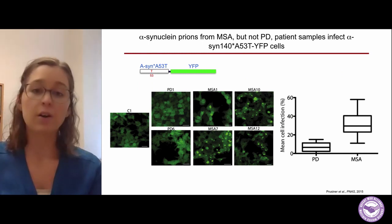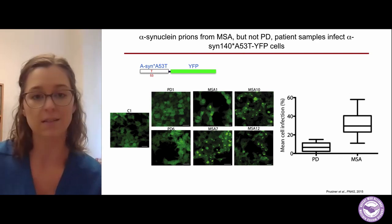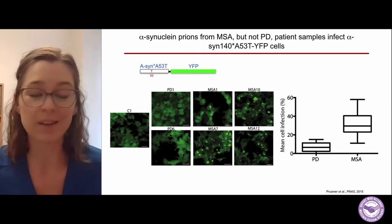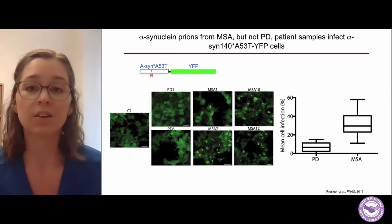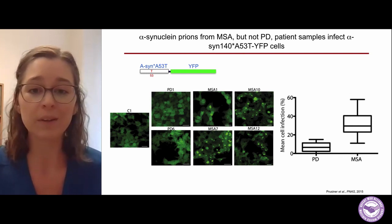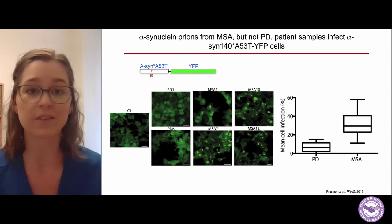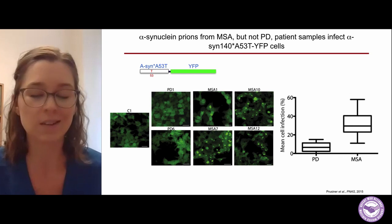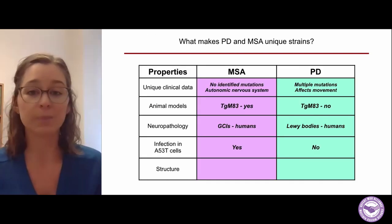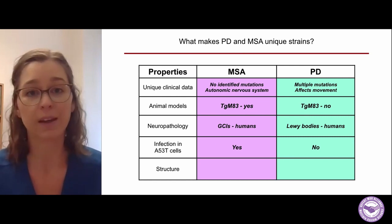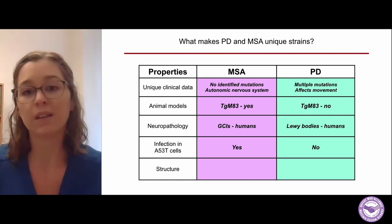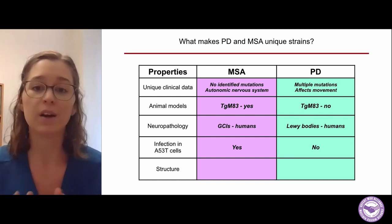Using the cellular assay, we first looked at MSA and Parkinson's disease. Similar to the mouse data, a control sample produces no infection in the cell model. With Parkinson's disease, just as it couldn't infect the mouse model, PD also can't infect these cells, as seen quantified in the graph. But when we look at the four cases of MSA used as the source of alpha-synuclein prions, there was significant infection. So we now have a mouse model where MSA propagates and PD doesn't, and a cell line where the same is true.